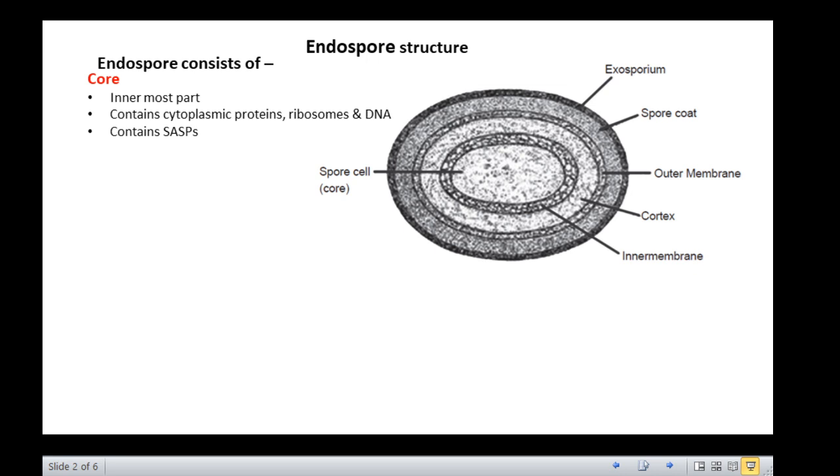The core cytoplasm contains very large amounts of divalent cations, mainly calcium, which are complexed with the spore-specific compound pyridine-2,6-dicarboxylic acid, that is dipycolinic acid, which plays a role in heat resistance and UV resistance. The amount of dipycolinic acid in the core is extremely high, accounting for about 5-15% of the total spore weight.